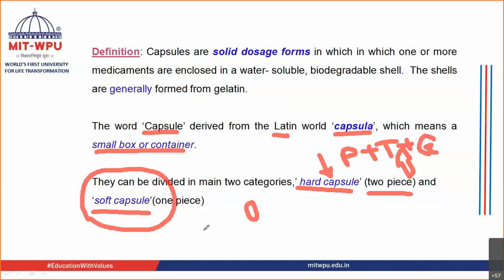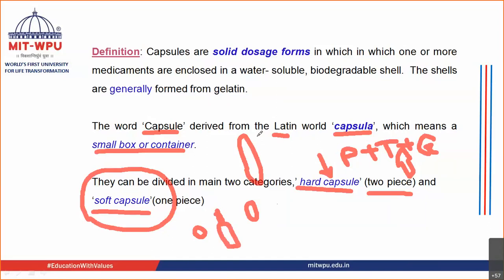Soft gelatin capsules are used for liquid or semi-solid preparations — for example, the ointment for cataract comes in the form of soft gelatin capsules. Hard gelatin capsules have only one shape (oval with cap and body), while soft gelatin capsules can have different shapes: round, oval, or tube-like.